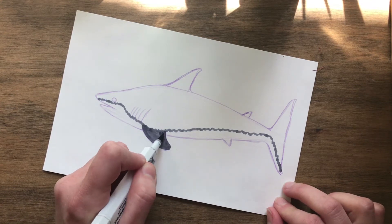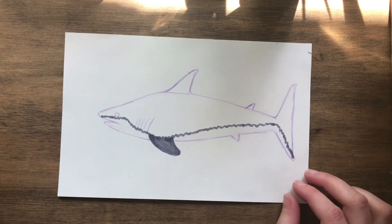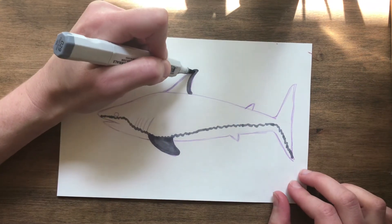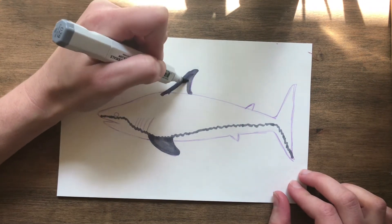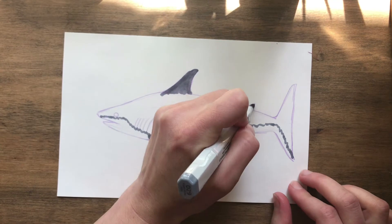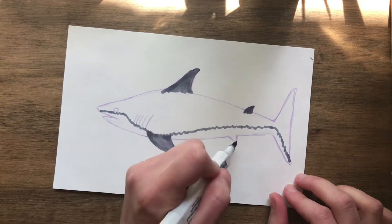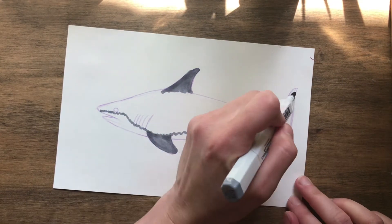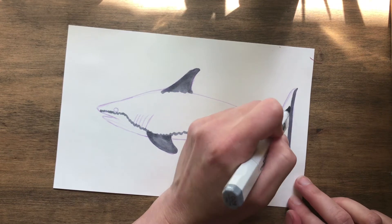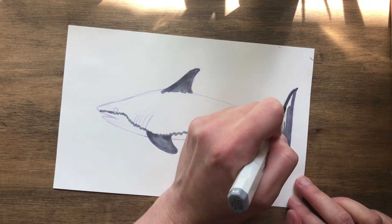And then we are going to color in this fin here on the side. Color in the top fin. And the little one. And then basically everything that is above that line that we just drew with the gray.